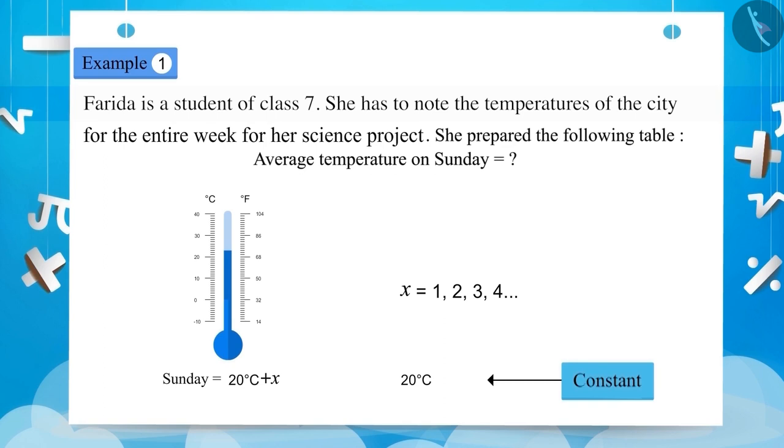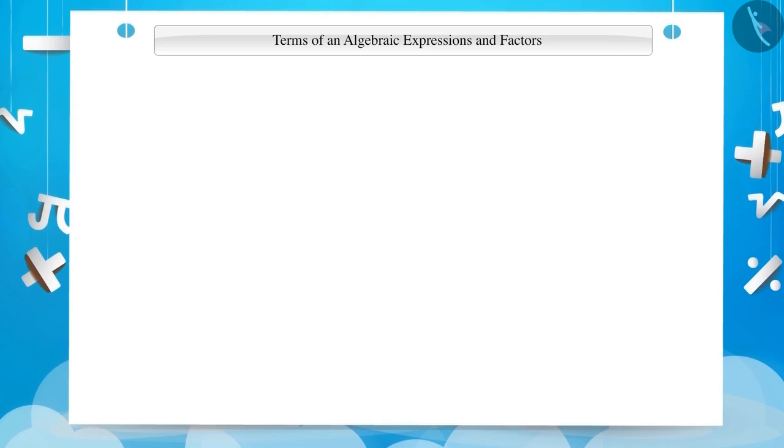So far, we have studied how to form an expression. Now, we will learn about the terms of an algebraic expression and their factors. 5X plus 8. Let's look at this algebraic expression. This expression has been formed by adding 8 to 5X. That means, we have to add or subtract the terms to form an expression.